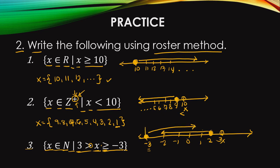So which elements satisfy the condition? In the roster method, we write x equals: a set of negative 3, negative 2, negative 1 — then dot dot dot — then the last element is 2.